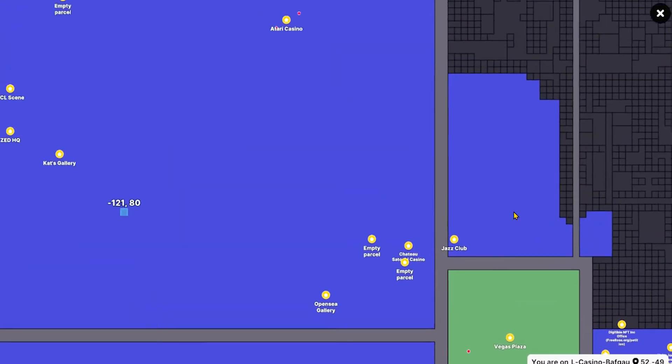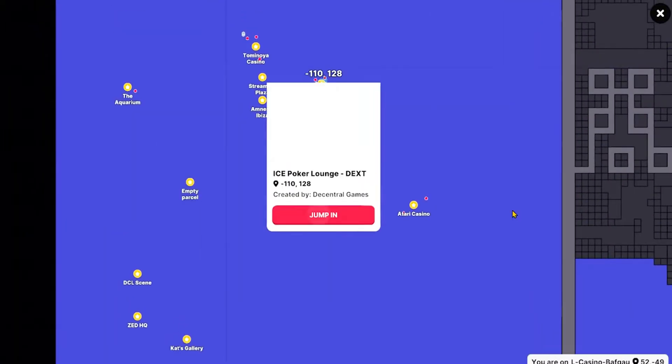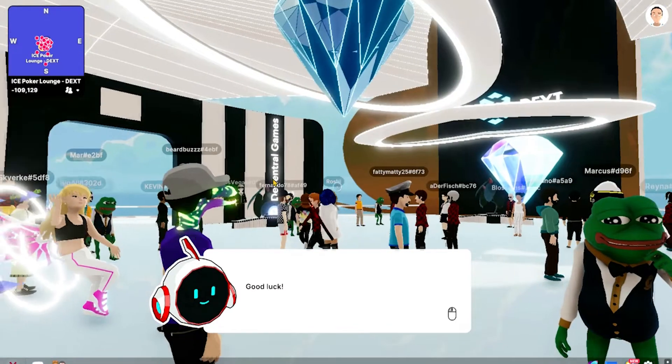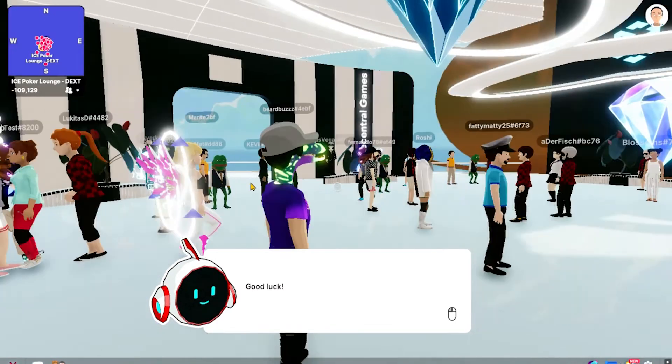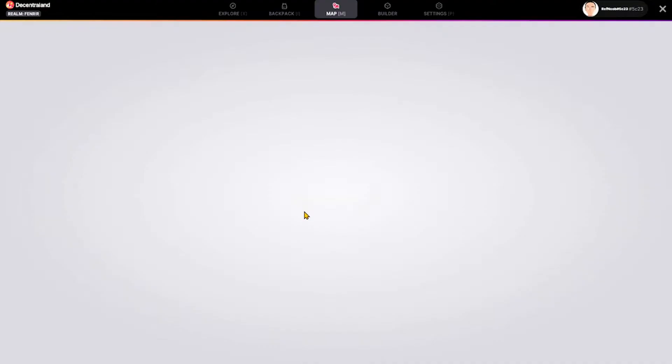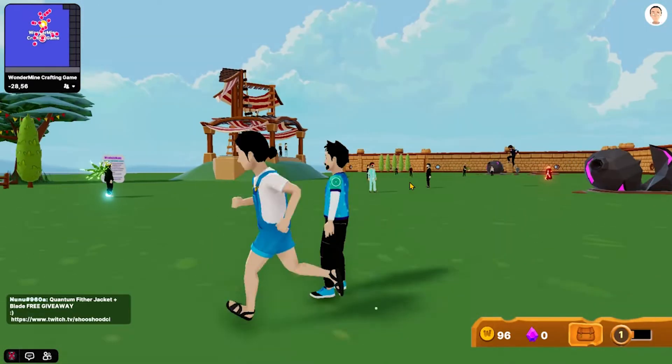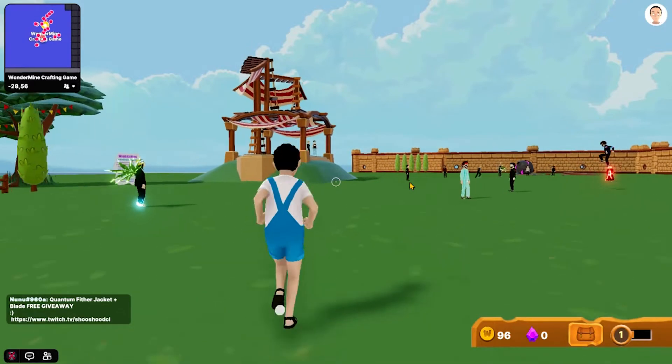Outside of Genesis Plaza, we can find where the crowds are by looking at the map, and most of them like to hang out in the casinos in Vegas City, which is really indicative of the speculative nature of this place. There's also this area called the Wonder Zone where you can mine for items that you can turn into NFTs that can be sold for mana. So that's why all these people are here grazing like cows.